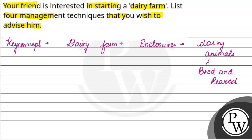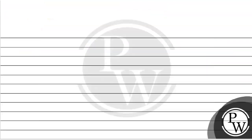If you have a friend to advise, we need to suggest certain methods. The first is proper selection — that could be proper selection of a breed.